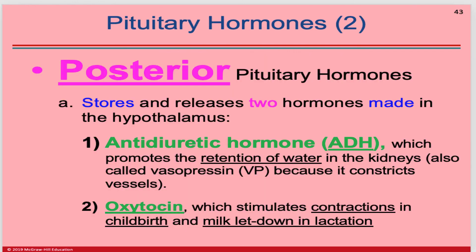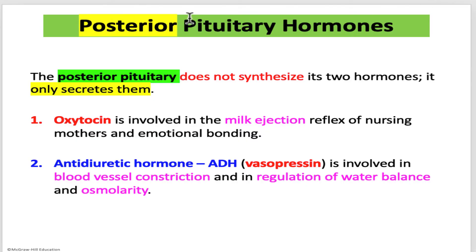The posterior pituitary is easier to start with — it produces just two types of hormones. ADH, anti-diuretic hormone, promotes the retention of water in the kidneys, also known as vasopressin. Oxytocin is a hormone involved in reproduction and birth, mainly influencing women — it stimulates contractions in childbirth and thereafter the milk letdown response in lactation. To reiterate: the posterior pituitary tissue is not tissue in its own right. It's just an extension of the hypothalamus; therefore the posterior pituitary does not synthesize anything because it has no cell bodies — only terminal axons and boutons are present there.